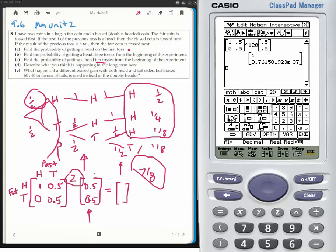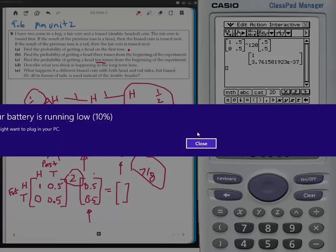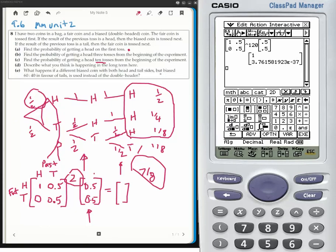Part D. What happens if a different biased coin with both heads and tails running, but biased to 60, 40? Well, if it's 60, 40, I'm going to change this. It's 60% chance of getting a tail. So that becomes 0.6. That becomes at the top 0.4.